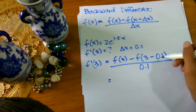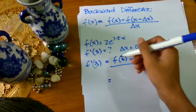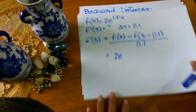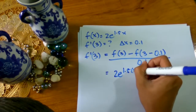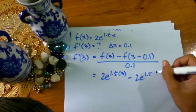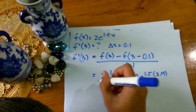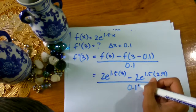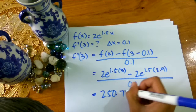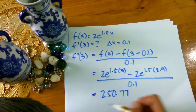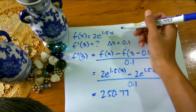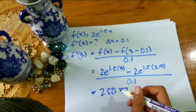So hanapin natin ang value ng function at 3 and the value ng function at 2.9. So: 2e raised to 1.5 times 3, minus 2e raised to 1.5 times 2.9, all over 0.1. By calculating this we get 250.77. So this is the approximate value of the function 2e raised to 1.5x, given x = 3 and delta x = 0.1. The approximate value is 250.77.